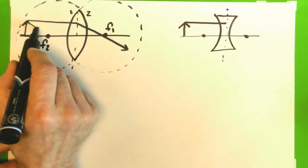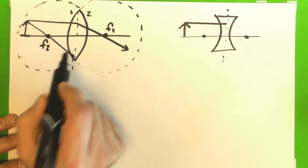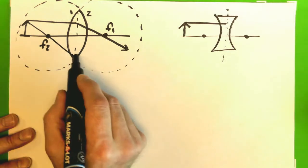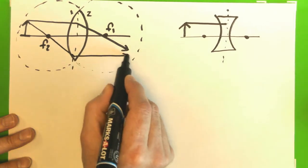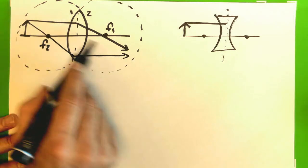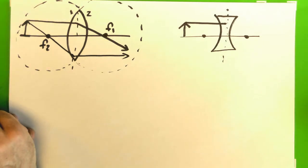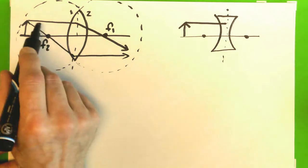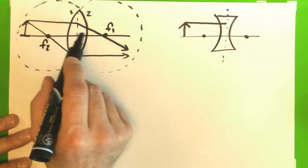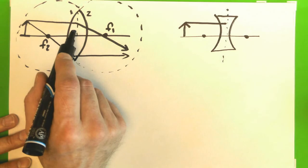The focal ray is associated with the second focal point and comes out parallel. The central ray goes to the center no matter what kind of lens it is. So what do I mean by associated? Well, in this case,